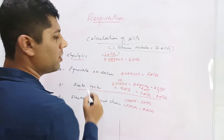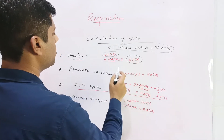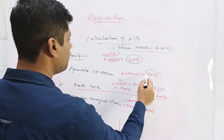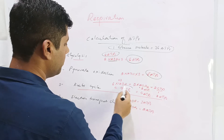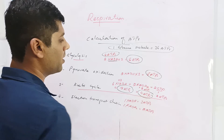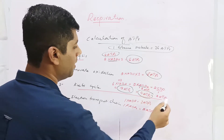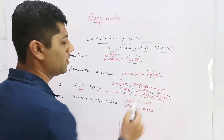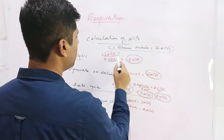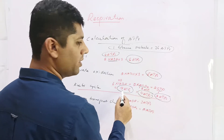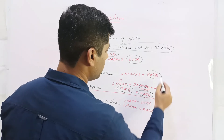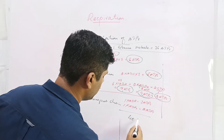Now we add all the ATPs produced: four ATPs from glycolysis, six ATPs from NADH produced in glycolysis, six ATPs from pyruvate oxidation, 18 ATPs from Krebs cycle NADH, four ATPs from Krebs cycle FADH2, and two ATPs from GTP production. Adding these — 4, 6, 10, 16, 18, 34, 38, and 2 — gives a total of 40 ATPs produced.